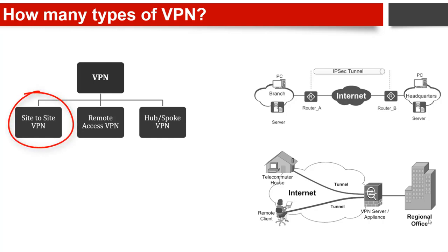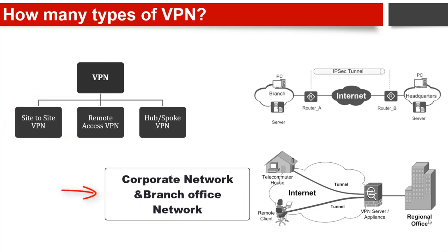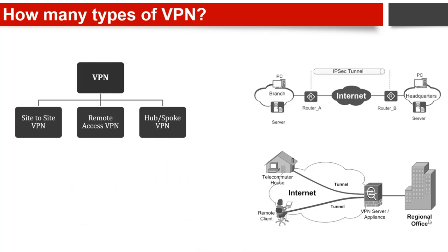In Site-to-Site VPN, it is a connection between two or more networks. These networks are a corporate network and a branch office network.